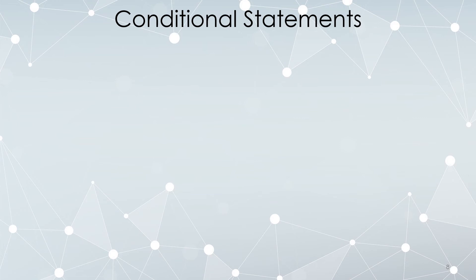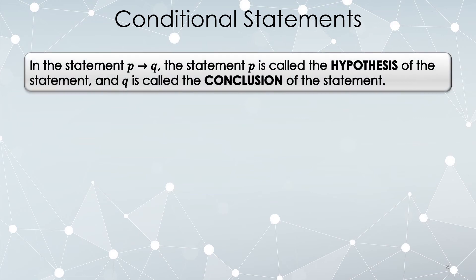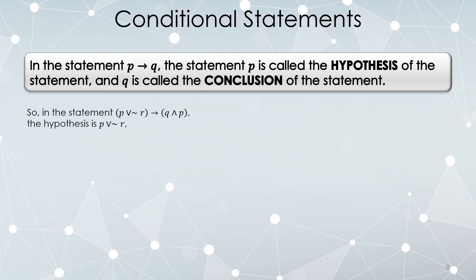Let's take a closer look at conditional statements. If you have a conditional statement, there's a conditional arrow with a statement on the left and right. The statement to the left of the conditional arrow is called the hypothesis of that conditional statement, and the statement to the right is called the conclusion. For example, the legitimate statement P or not R to the left is the hypothesis, and the conjunction Q and P to the right is the conclusion.